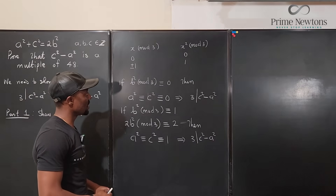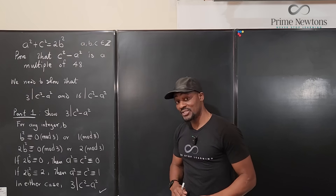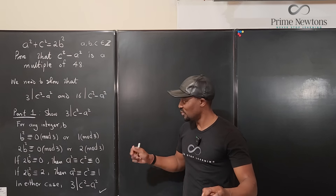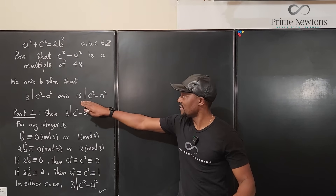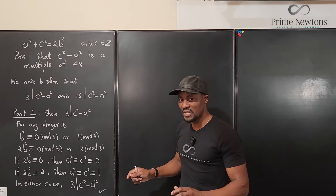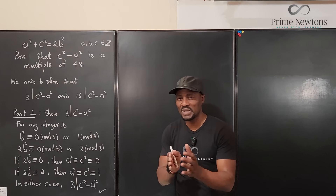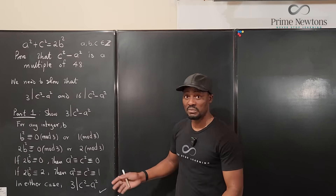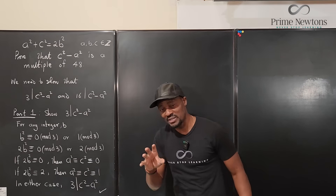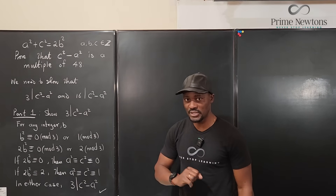Now I'm going to use the same reasoning with a little twist to show that c² - a² is divisible by 16. This is the strategy you want to adopt when doing divisibility proofs, especially when squares are involved: find something convenient and relevant to the problem. So let's show that 16 divides c² - a².